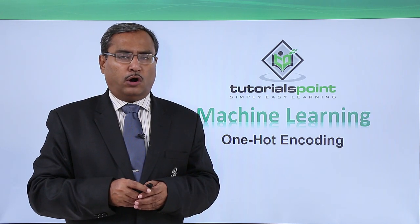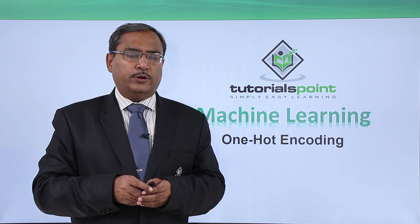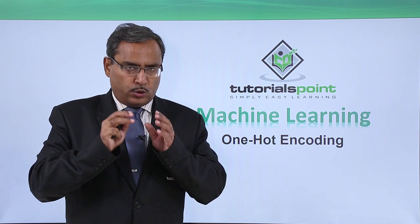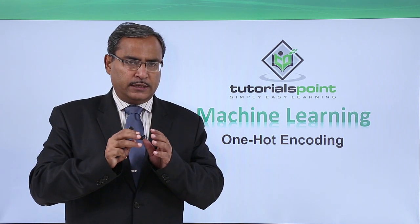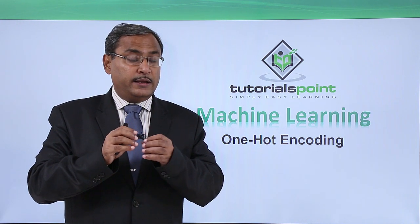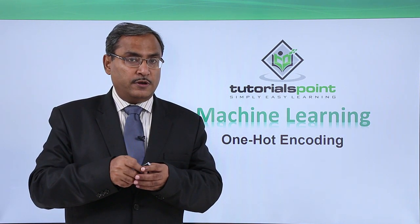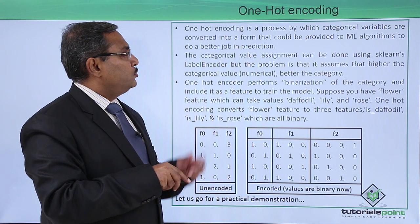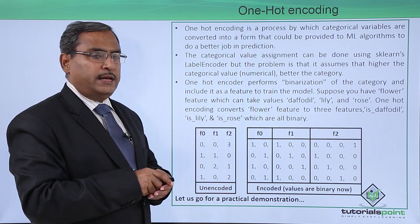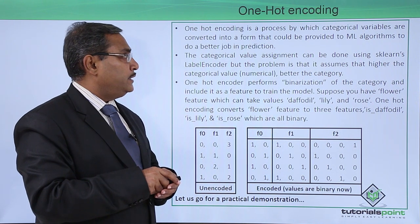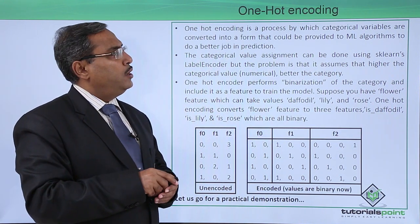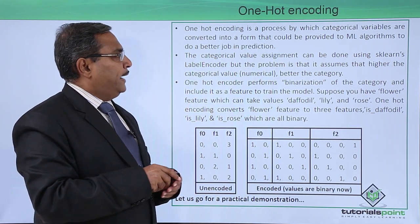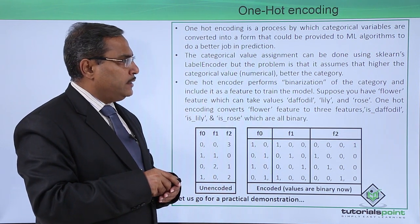In this video we are going to discuss one hot encoding. One hot encoding is a process by which categorical variables are converted into a form that could be provided to machine learning algorithms to do a better job in prediction.